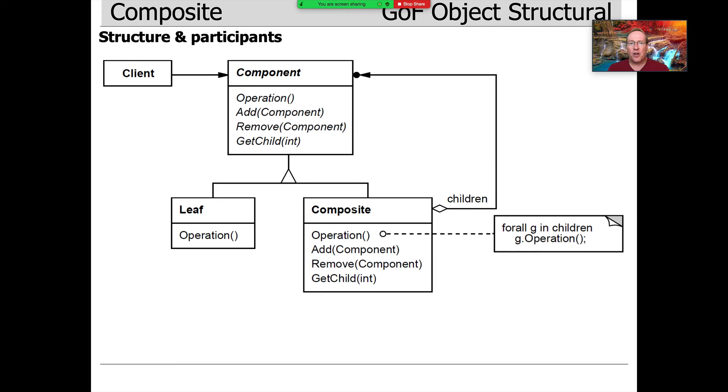Then you can see that leaf node is not refined any further. It's going to just have, in this case, some operation to do something. It has no children, in other words.